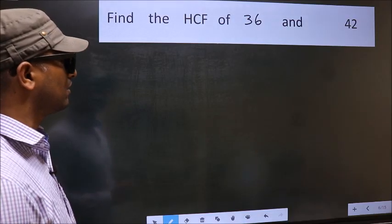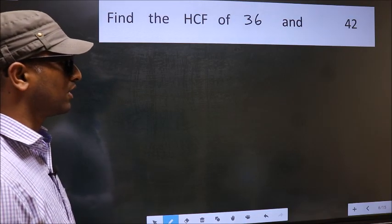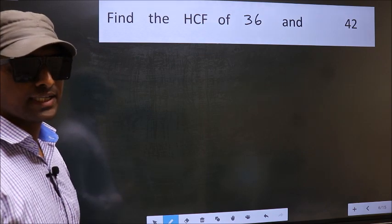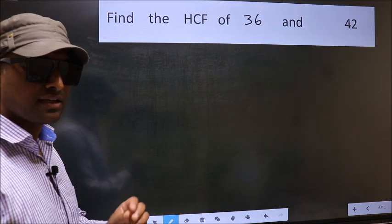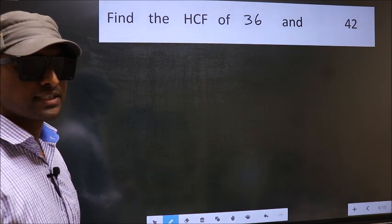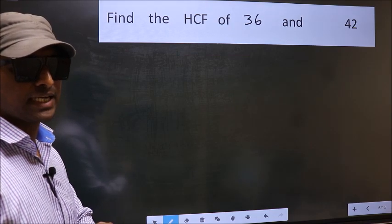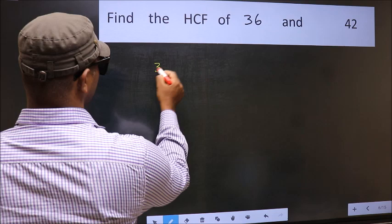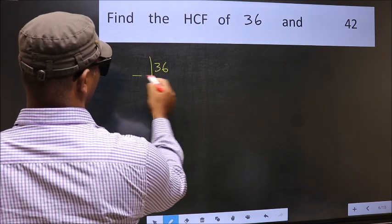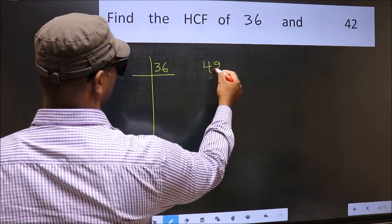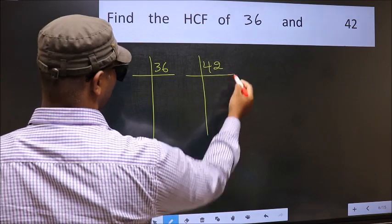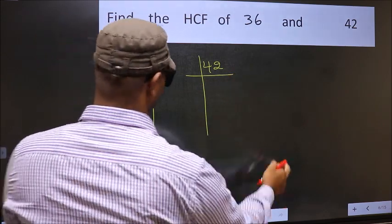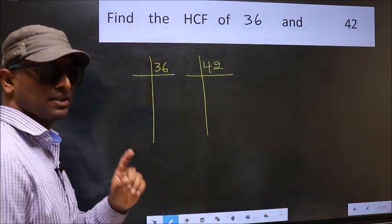Find the HCF of 36 and 42. To find the HCF, we should do the prime factorization of each number separately. What I mean is 36 and 42. This is your step 1.